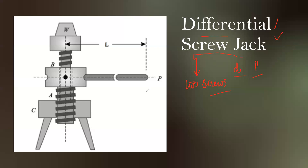The differential screw jack possesses two screws: S1 and S2. As far as S1 is concerned, it is threaded on the outside only. But S2 is threaded inside as well as outside, as you can see from these projections, because S2 carries S1 inside it. The motion of S1 is possible inside S2 because S2 is threaded internally.